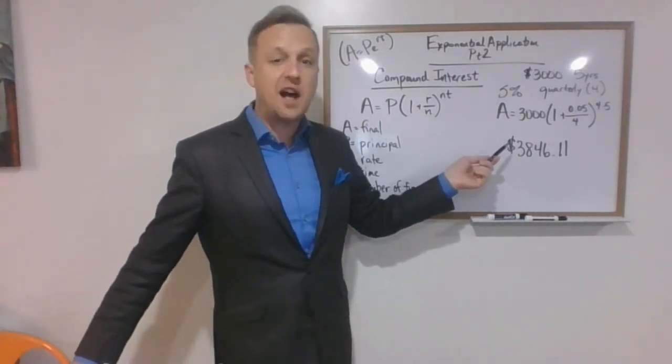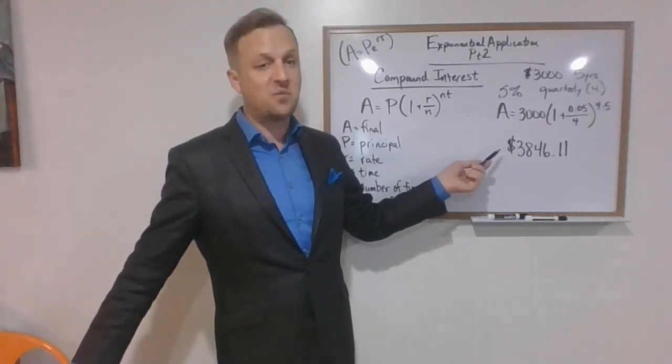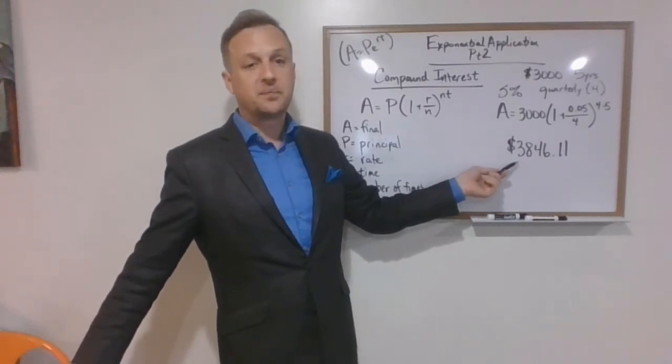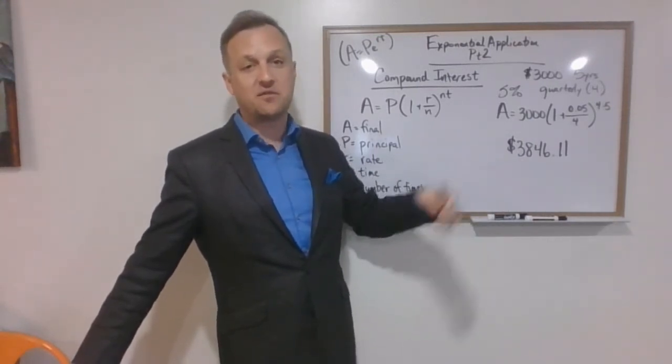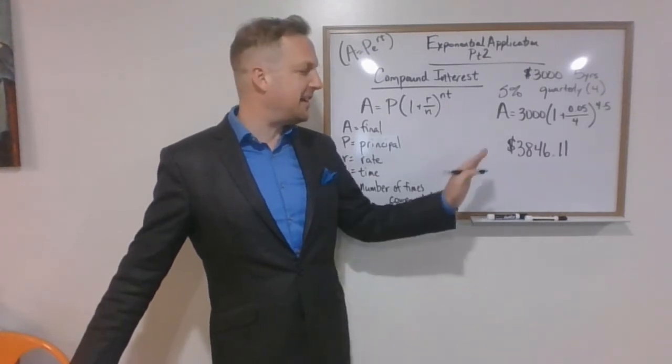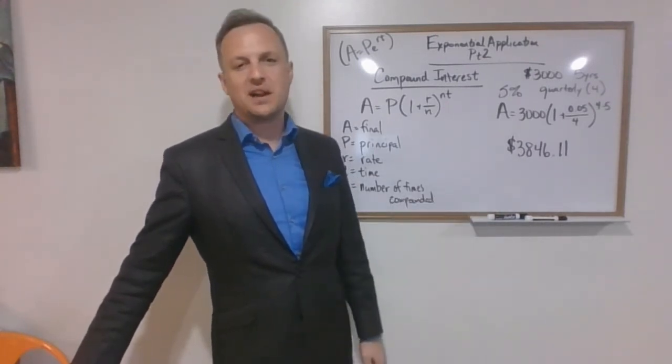And then you are going to see after 5 years of not touching your money and letting it work for you, you will have the princely sum of $3846 and 11 cents.